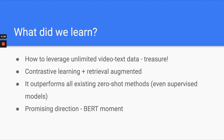So what did we learn? We learned how to leverage unlimited video-text data — it's a treasure. How to do contrastive learning and retrieval augmentation: we didn't focus deeply on how to construct negative examples, but we learned a lot about contrastive learning on video-text. We know this model outperforms zero-shot learning methods and even outperforms many supervised models. More importantly, it provides a very promising direction for video-text understanding, and you can apply a very similar method to audio-text as well.